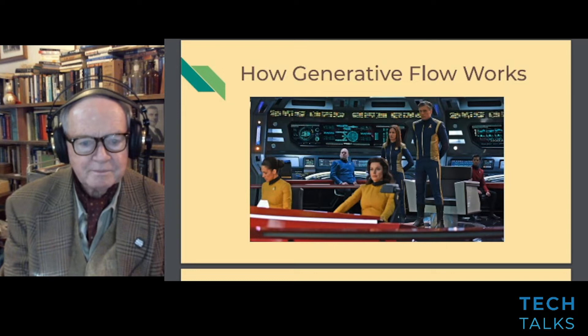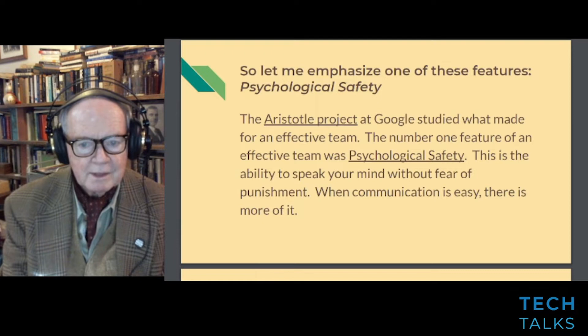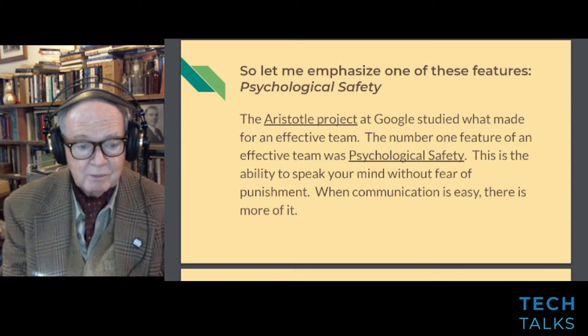Let me emphasize one of these features: psychological safety. The Aristotle Project at Google studied what made for an effective team. The number one feature of an effective team according to the study was psychological safety — the ability to speak your mind without fear of punishment. When communication is easy, there's more of it.